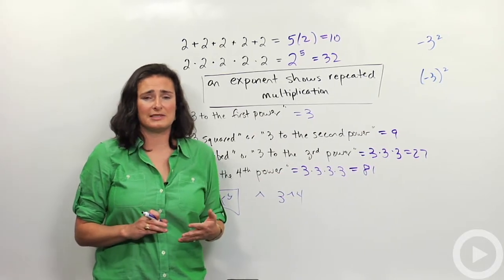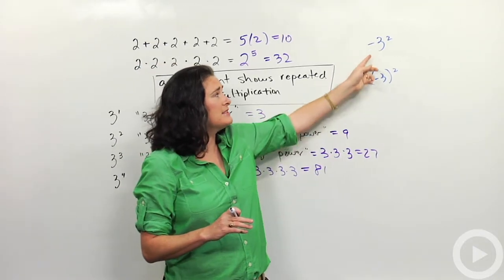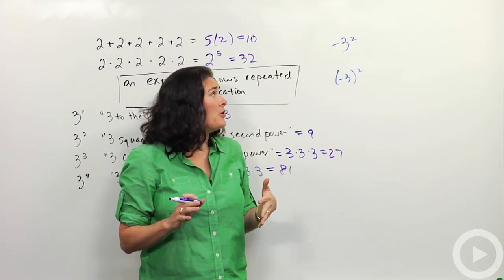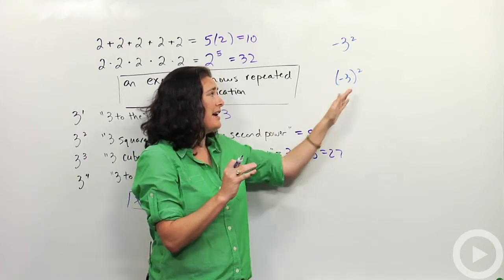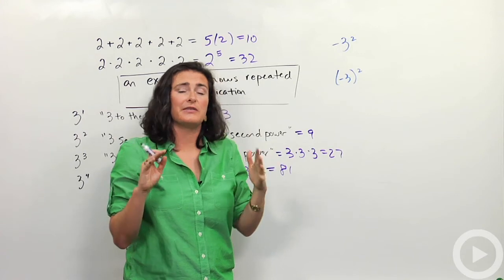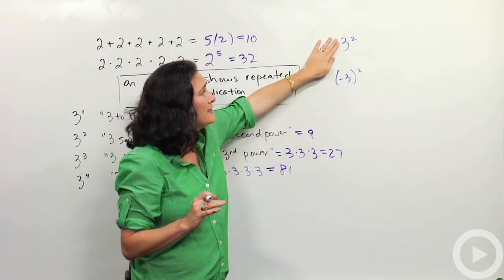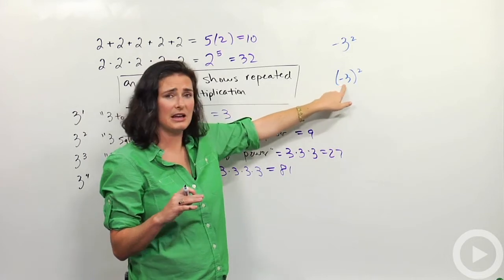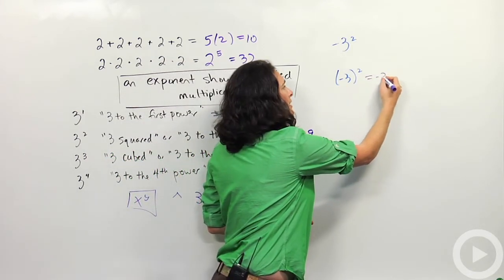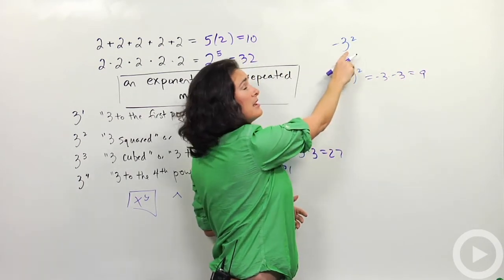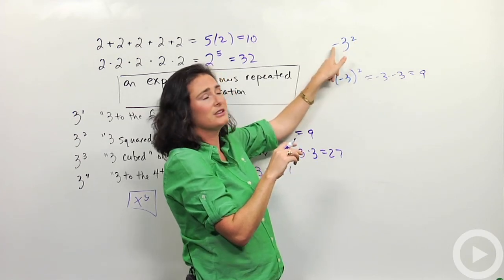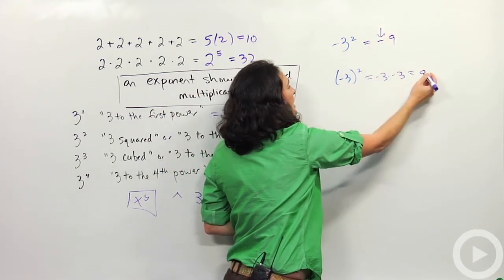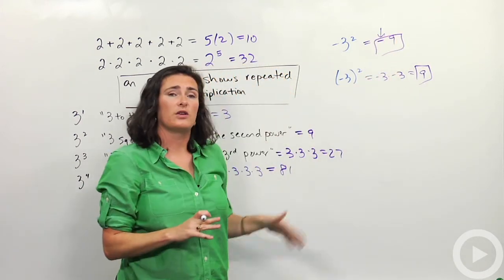I want to talk about a couple of really common mistakes. Some problems that students almost always mess up involve parentheses — notice the subtle difference. It has to do with the order of operations. If I have negative 3 squared — with parentheses — that means negative 3 times itself: negative 3 times negative 3 is positive 9. Whereas without parentheses, it means do 3 squared first and then take the opposite of your answer. 3 squared is 9, so the opposite is negative 9. That negative sign is a very big deal — a lot of students get those two confused, so please make a note of that.